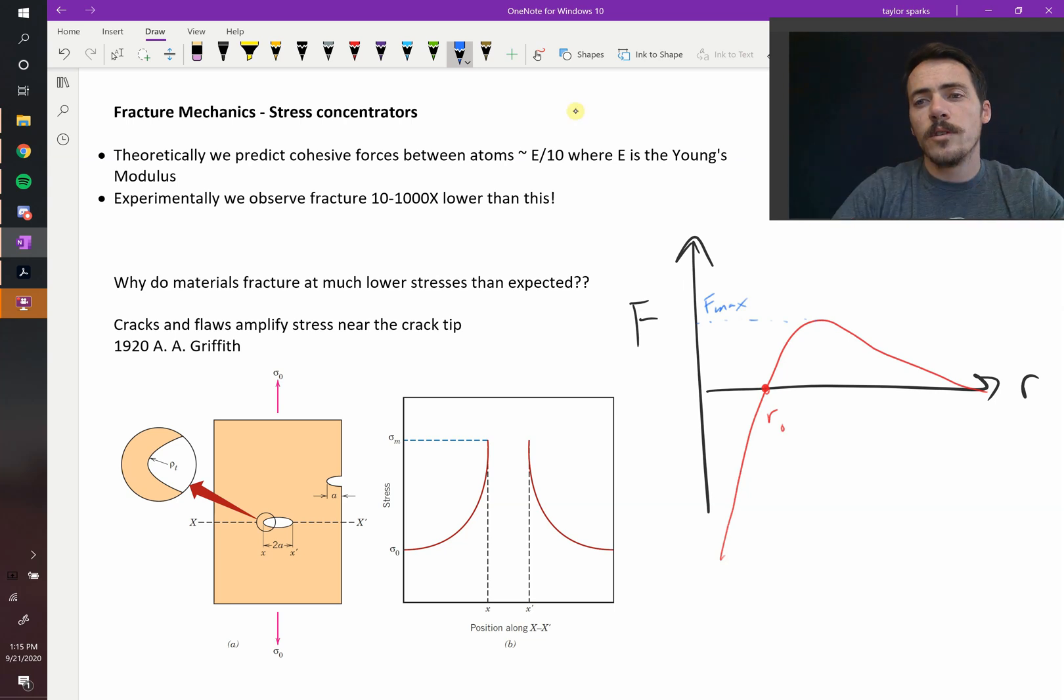If you overcome that force, then you could pull things infinitely away. And so from a theoretical perspective, that value that you should have to overcome is something like the modulus value, the Young's modulus, that's the stiffness of a material, divided by 10.